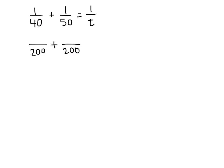So we can get the first fraction to have a denominator of 200 by multiplying top and bottom by 5. That gives us 5 over 200. And for the second fraction, we can multiply top and bottom by 4, and we end up with 4 over 200. And that still equals 1 over t.